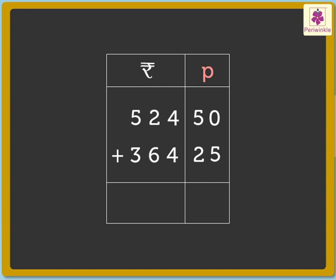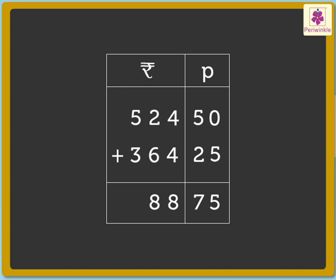First, we add the paise. 0 plus 5 is equal to 5. 5 plus 2 is equal to 7. Now let us add the rupees. 4 plus 4 is equal to 8. 2 plus 6 is equal to 8. 5 plus 3 is equal to 8.